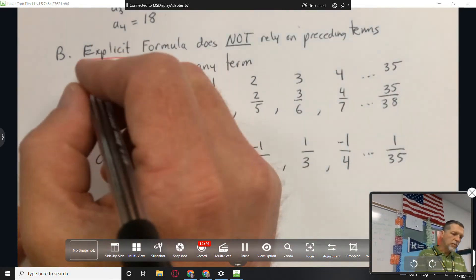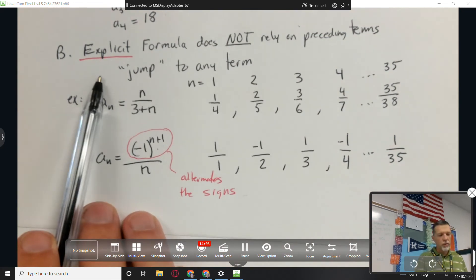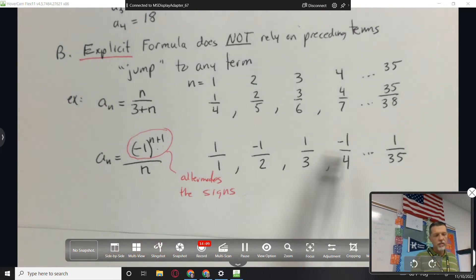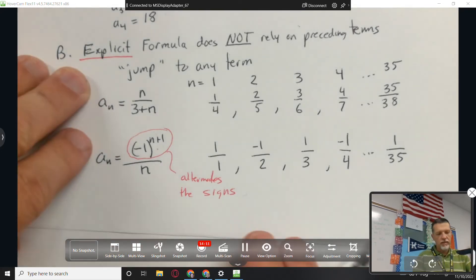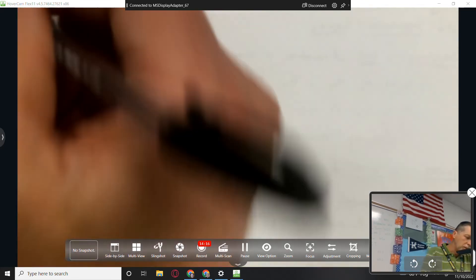Okay, so explicit. If we're working with a sequence, we generally like explicit better. And most of the ones we deal with will be explicit. Because you can jump to any term you like. But recursive, you constantly have to build up to find what you need.